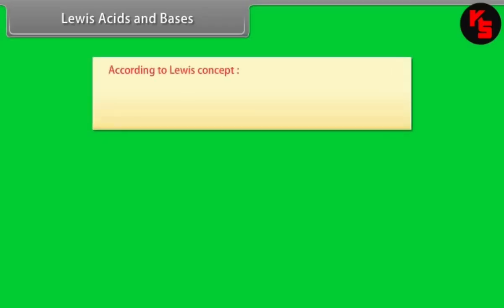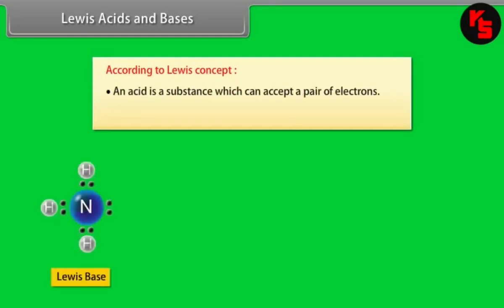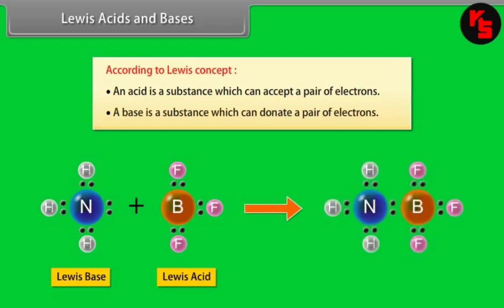Lewis Acids and Bases. According to Lewis' concept, an acid is a substance which can accept a pair of electrons, and a base is a substance which can donate a pair of electrons. For example, in the reaction of BF₃ with a Lewis base, BF₃ acts as the acid.